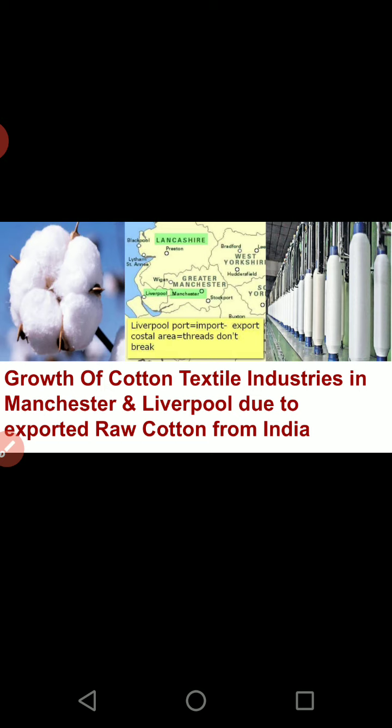Another example is cotton. India's cotton was well known and basically provided raw material to Britain. That is the main reason why Manchester and Liverpool developed their cotton textile industries — they took the complete raw material from our country. This is also a form of globalization: our product went to another country. When cotton textiles were made there, their product also came back to our country. The only difference is that there were some restrictions and taxes back then, whereas today it is free and open.